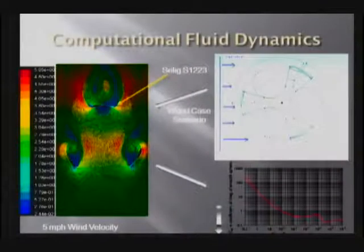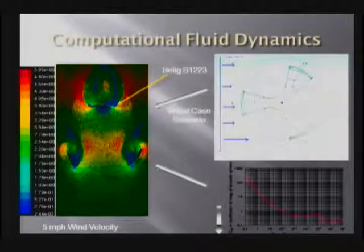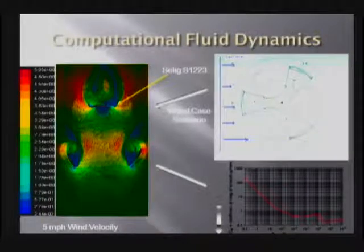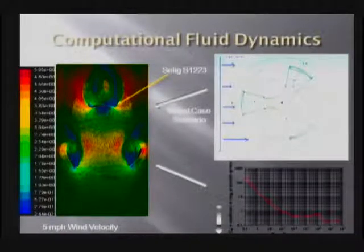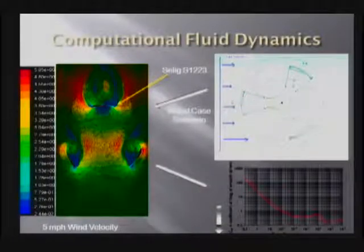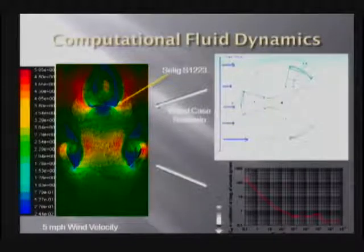We figured out the worst possible scenario for our prototype in the wind tunnel, which is shown on the top right. The wind velocity, when it's perpendicular to one of the blades, produces maximum drag force on the shaft. This was later designed in Fluent for computational fluid dynamics and in Gambit. For a five miles per hour wind velocity, the coefficient of drag and Reynolds number were found.